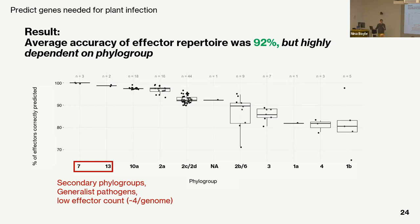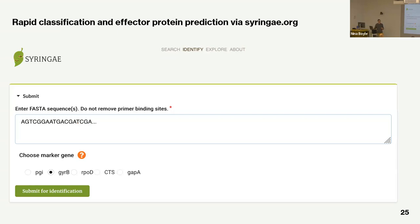On the other end, phylogroup 1b — very virulent, key pathogens — were hardest to predict, because they're undergoing a lot of evolution and effector protein transfer. So for more aggressive pathogens, marker gene sequencing and then predicting effector proteins might not be the best approach.